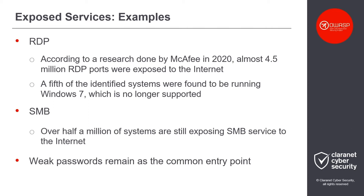Meaning that no security updates will be released for this service. Similarly, over half a million systems are still exposing the SMB service to the internet, and this is after the 2017 WannaCry incident, which exploited exposed vulnerable SMB servers. In June 2020, a new worm vulnerability affecting the SMB service was revealed by a security researcher, called SMB Ghost. Although there are no publicly available exploits at the moment, there is evidence that malicious actors are already exploiting this vulnerability. Considering the number of exposed SMB services, this is another disaster just waiting to happen.